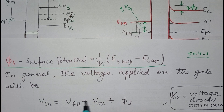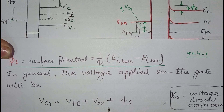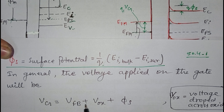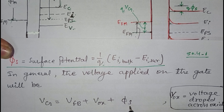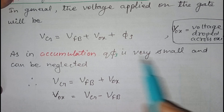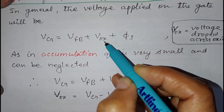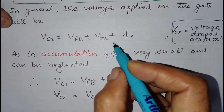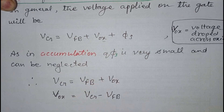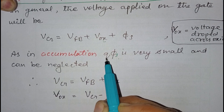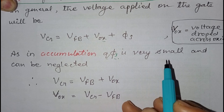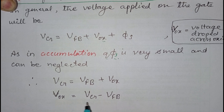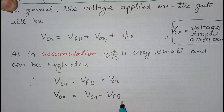In general, the voltage applied at the gate is given by: Vg equals V_FB plus V_ox plus phi_s, where V_ox is the voltage drop across the oxide and phi_s is the surface potential. From this equation we can find V_ox. In accumulation mode, the band bending phi_s is very small, so we can neglect it, giving us V_ox equals Vg minus V_FB.